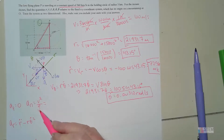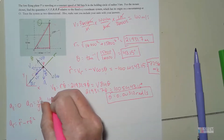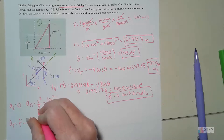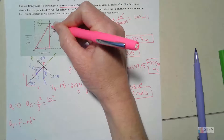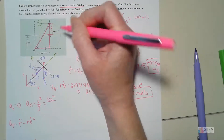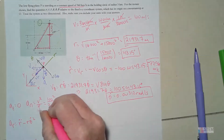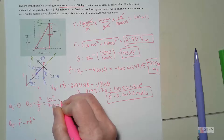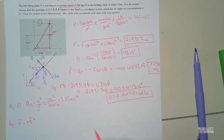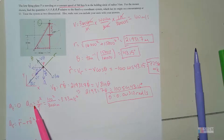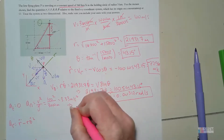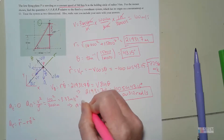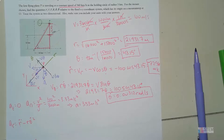The normal acceleration equation is aₙ = v²/ρ. I know v = 100 m/s, and ρ is the radius of the circle = 3 km = 3000 meters. So aₙ = 100² / 3000 = 3.33 m/s². Since aₜ = 0, the magnitude of the total acceleration is also 3.33 m/s².